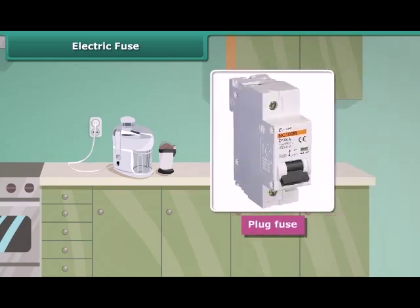A plug fuse is used in our houses. The plug fuse consists of two parts: namely, the porcelain casing and the porcelain grip. This fuse has a thin wire of tin and lead alloy, which has a low melting point. A cartridge fuse is generally used in electrical appliances.